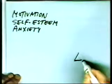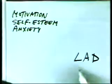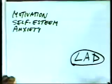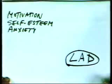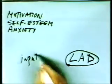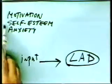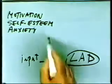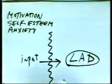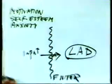Here's how it works. Somewhere in the brain, Chomsky tells us, is a language acquisition device. Our job is to get input into the device. Low motivation, low self-esteem, high anxiety — the block goes up, the filter goes up, and the input cannot get in.